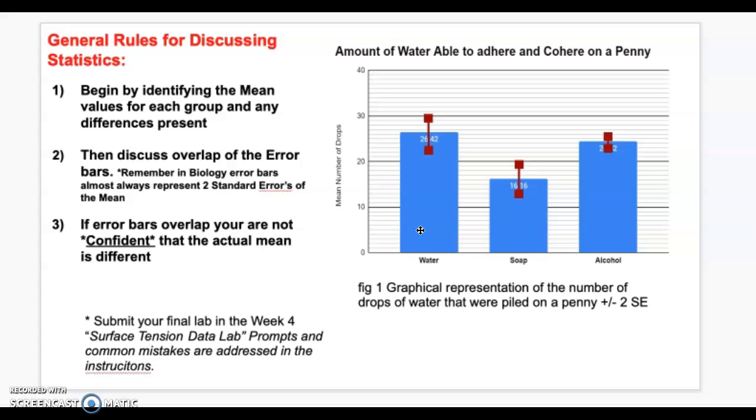Then you have to discuss the overlap of the error bars for each one. So in this case, we would in fact say water is higher than alcohol, followed by soap, except that these error bars tell a slightly different story.